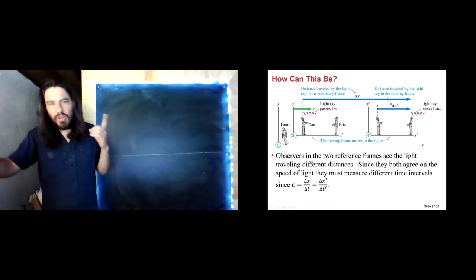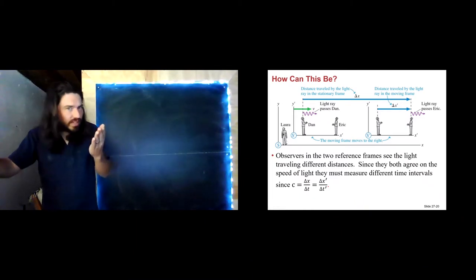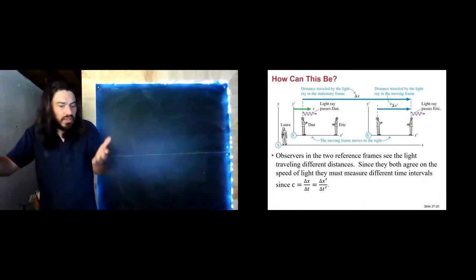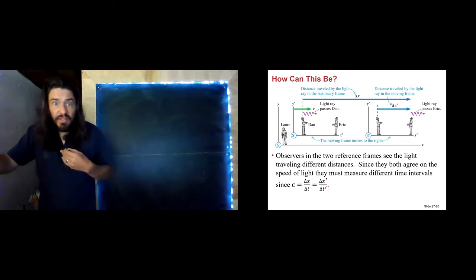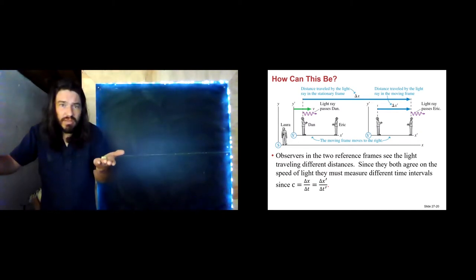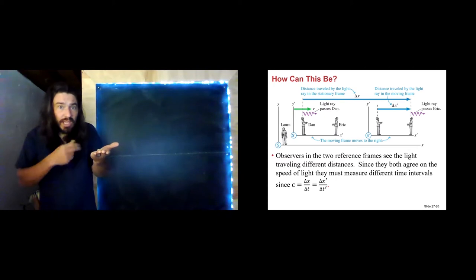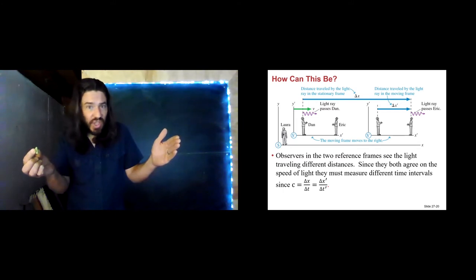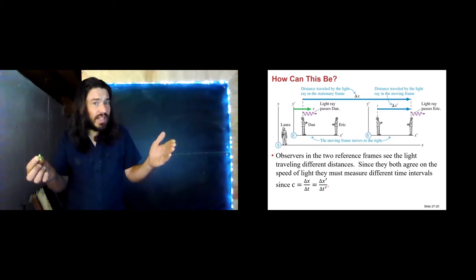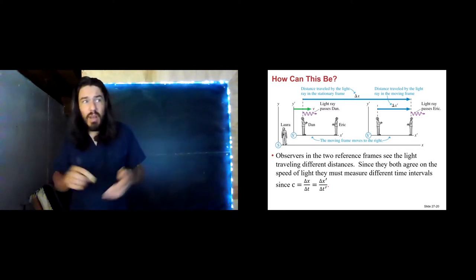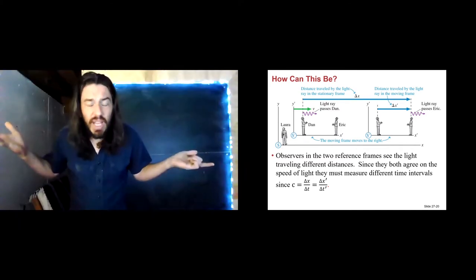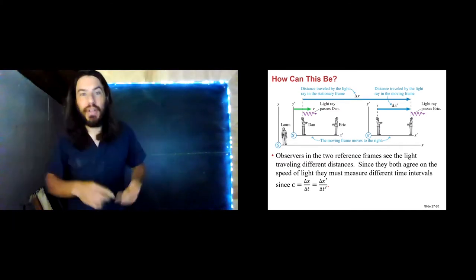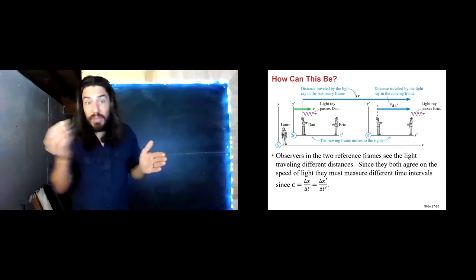You might be stuck in Laura's reference frame, but consider: we're moving at 700 miles per hour relative to the center of the Earth. If I move a piece of chalk from here to here, it's perfectly reasonable to say I just moved it two feet. But relative to the center of the Earth, accounting for Earth's rotation and orbit, it actually moved two feet plus maybe 30 miles.